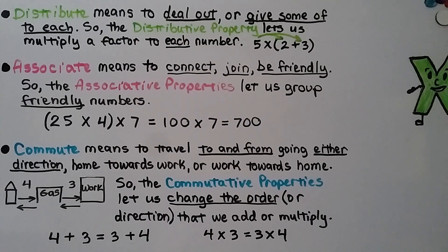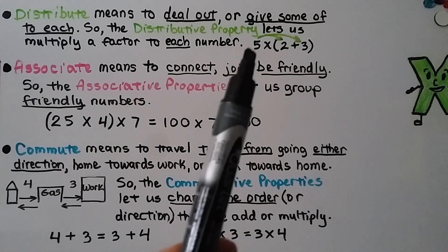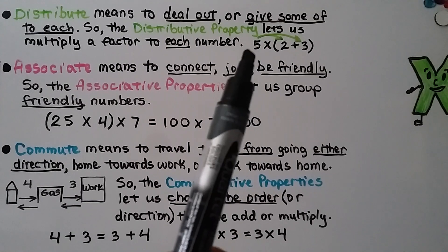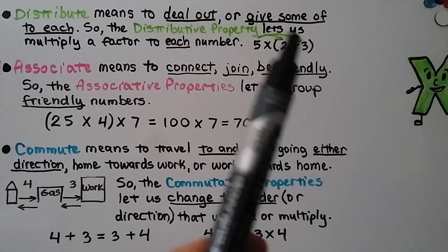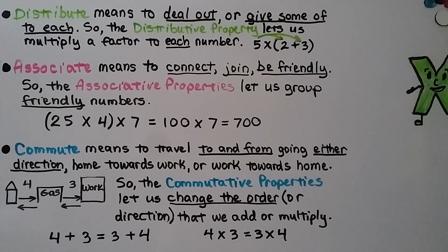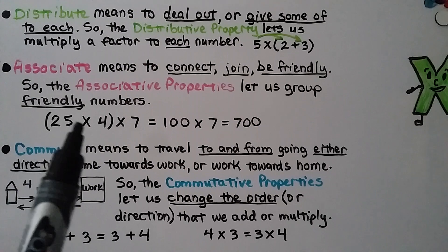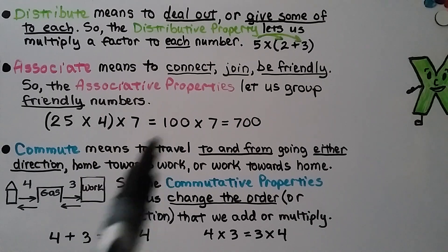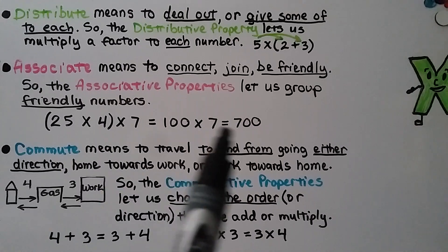Distribute means to deal out or give some to each. So the distributive property lets us multiply a factor to each number. We have 5 times 2 plus 3 — we do 5 times 2 and distribute the 5 to the 2, and 5 times 3, distributing the 5 inside the parentheses to each addend. Associate means to connect, join, be friendly. So the associative properties let us group friendly numbers — we can group 25 times 4, because that equals 100, multiply that first, and then multiply by 7 to get 700.